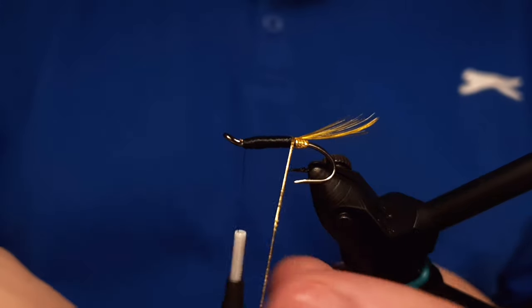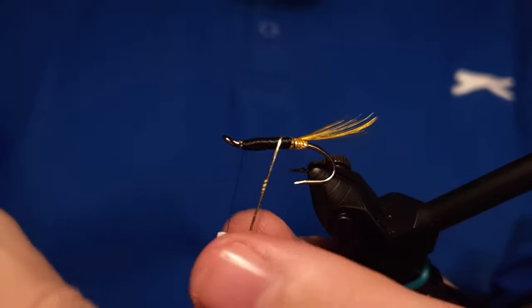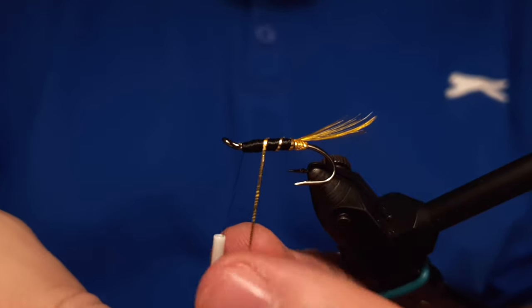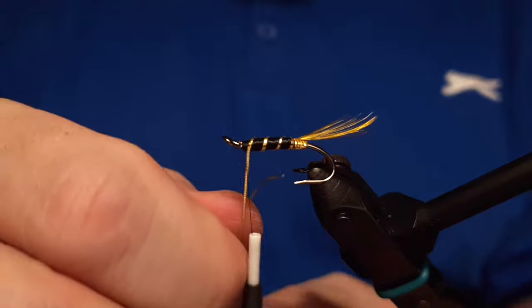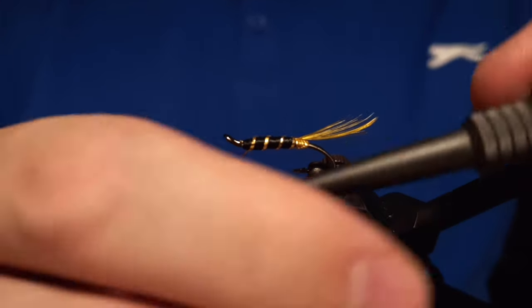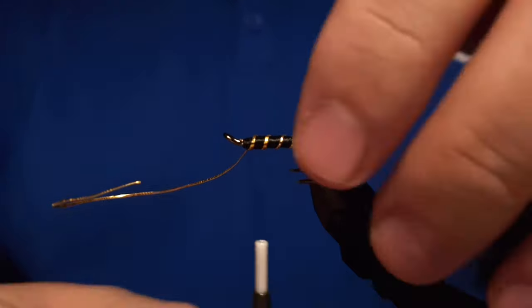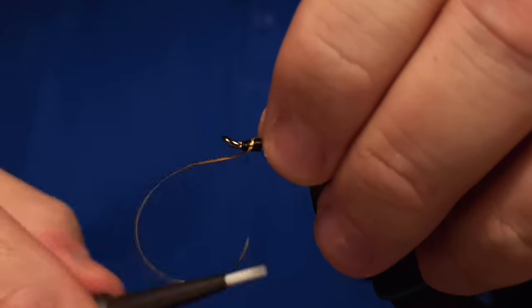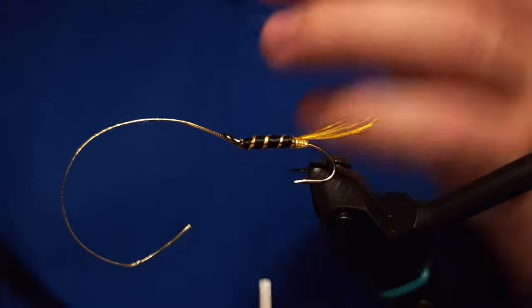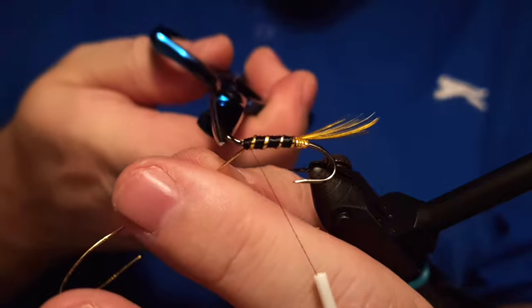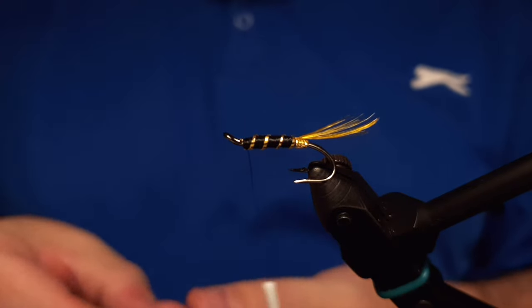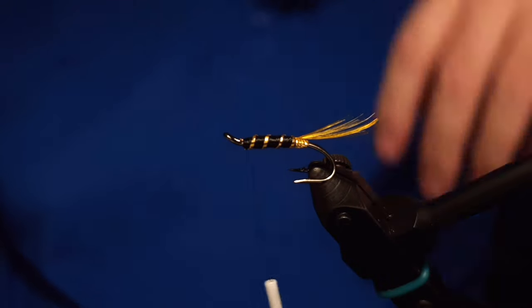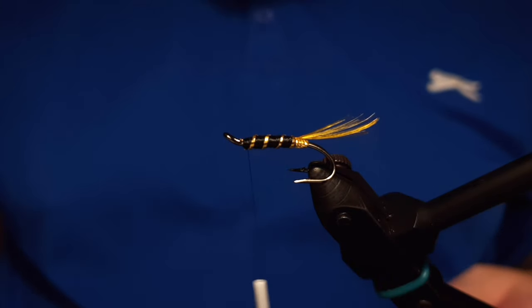Now the next step is to wrap the golden oval tinsel around the body of the fly and we lock it in place here with a few wraps. Actually for this fly I'm using a 12-0 thread simply because on those salmon flies which have hair wing and stuff I don't want to use too thick thread.